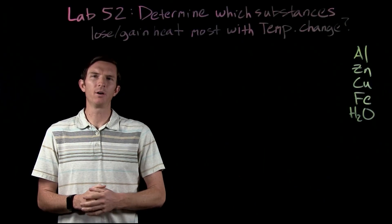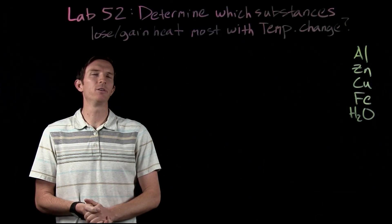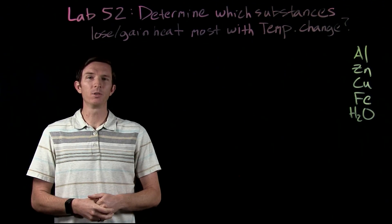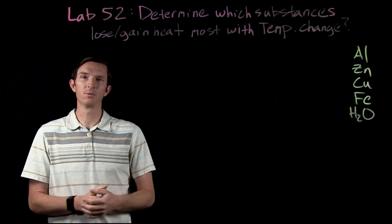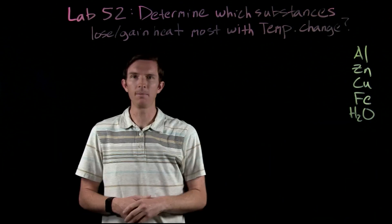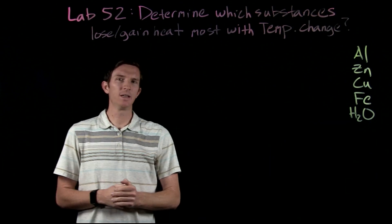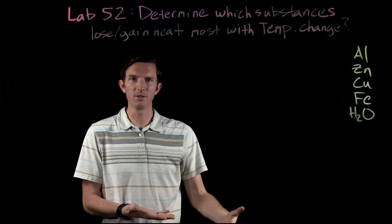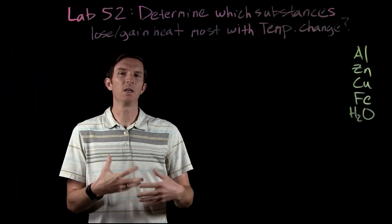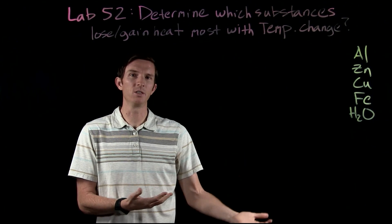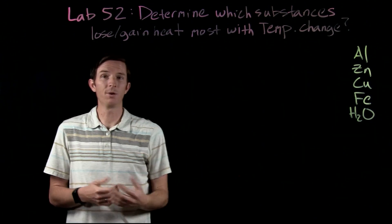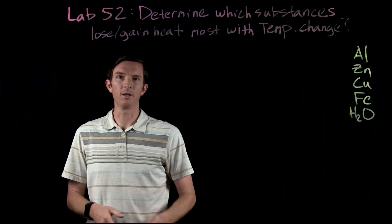So in the lab coming up this week, we are given the problem of trying to determine which substances lose or gain heat the most when they change temperature. We're going to be comparing five different substances: aluminum, zinc, copper, iron, and water. We want to identify, if they change five degrees Celsius, do they all lose or gain heat the same amount? Does it take the same number of joules of energy to change zinc five degrees versus copper versus iron? We want to compare these, and we need to measure this experimentally.